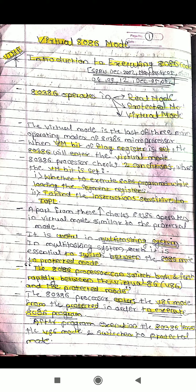For the virtual 8086 mode, the VM bit of the flag register should be set. Then only will it run in the virtual mode. For the 80386 processor, there are two conditions when the VM bit is set. When the VM bit is set, that means the processor is in virtual 8086 mode.